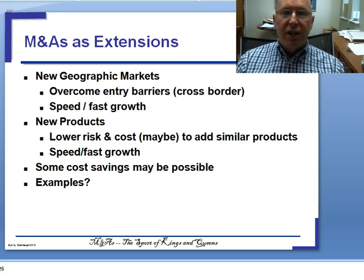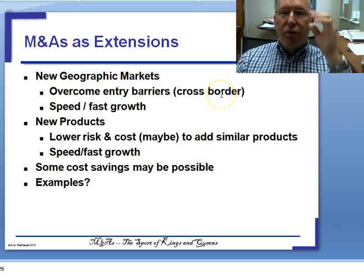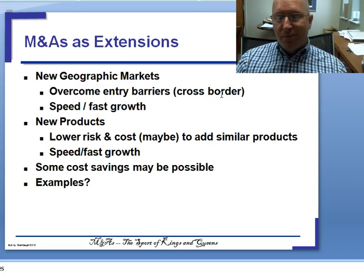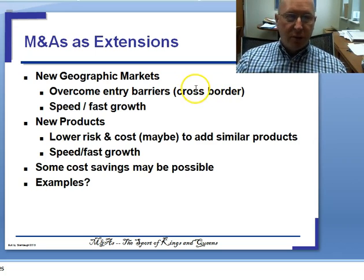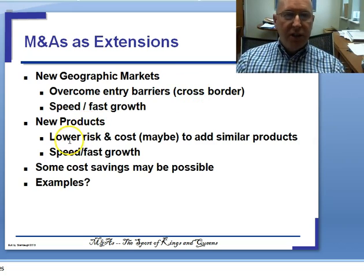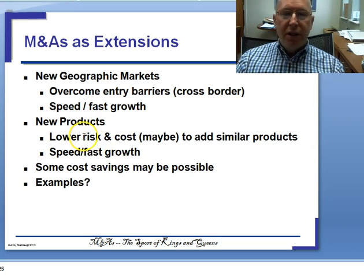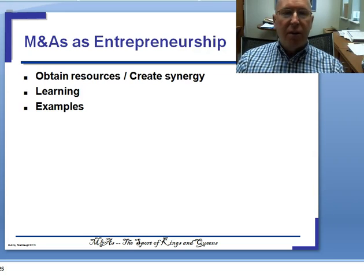Mergers and acquisitions as extensions is where we enter new geographic and product markets. Cross-border entry is easier with a host national presence, which is sometimes done through an acquisition. Developing new products is time-consuming and expensive, so buying a company that has a product line allows a company to diversify quickly and typically at lower cost and with lower risk. Sometimes cost savings are possible in extension M&As, but that's not the dominant economic logic.